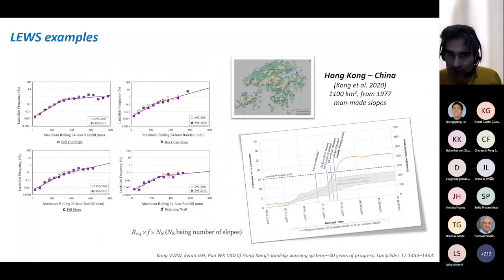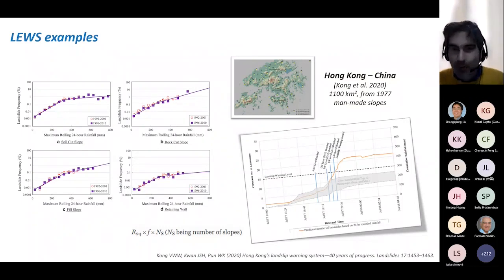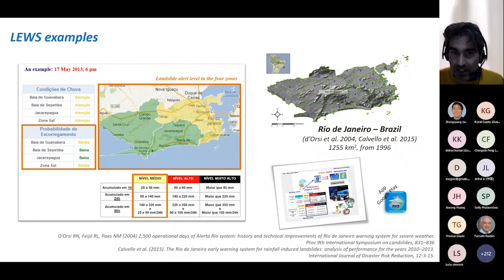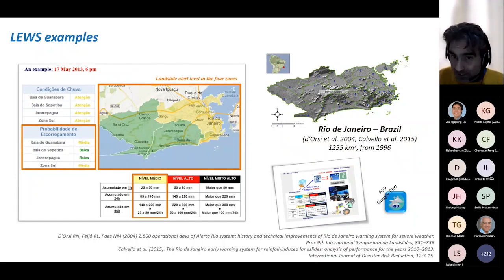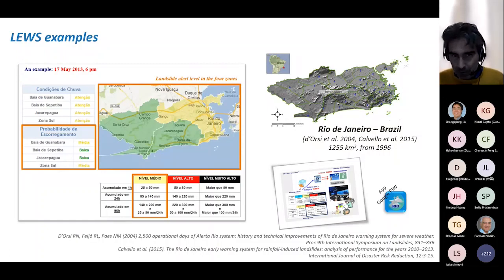Moving on to territorial systems: Hong Kong has the oldest system in the world, with the article I am mentioning recounting 40 years of progress. I will not say more on this as the next speaker — the head of the Geotechnical Engineering Office from Hong Kong — will devote his entire talk to how they manage landslide risk there. Another municipal system has been in operation in the city of Rio de Janeiro, Brazil, since 1996. Monitoring is essentially based on many rain gauges — within 30 across the city — and warnings are issued with reference to four warning zones and four warning levels: green, yellow, red, and black. If a black or red situation occurs in any zone, an alert dissemination procedure involving media broadcasting is followed.